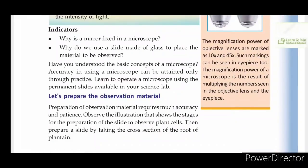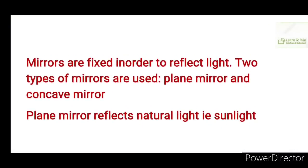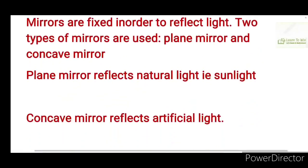Why is the mirror fixed in a microscope? Mirrors are fixed in order to reflect light. Two types of mirrors are used: plane mirror and concave mirror. The plane mirror is used to reflect natural sunlight, and the concave mirror is used to reflect artificial light.